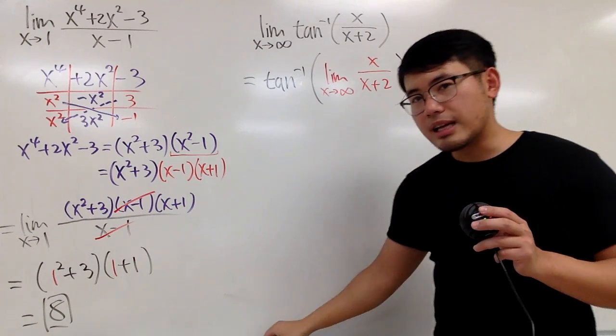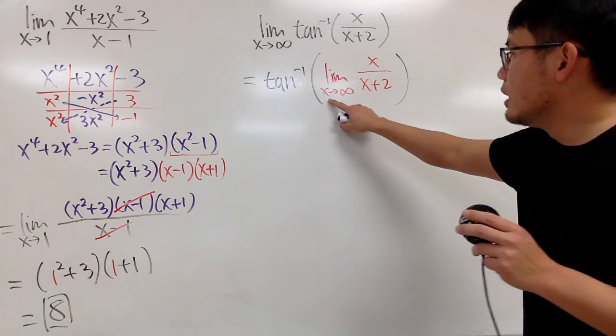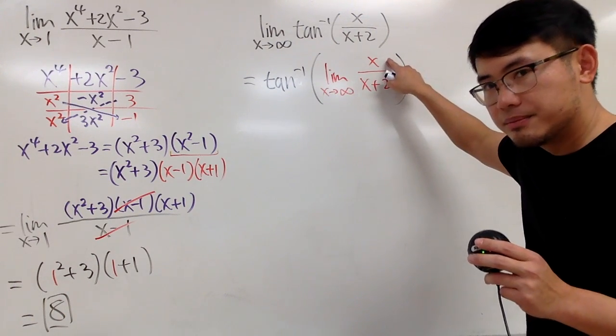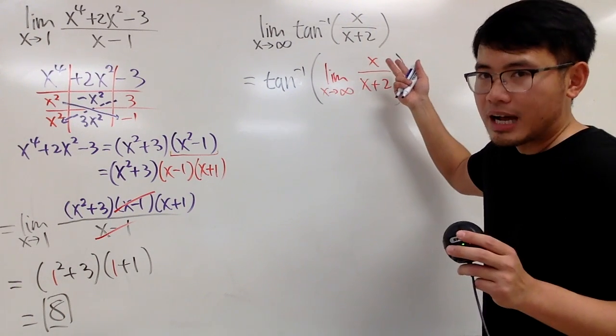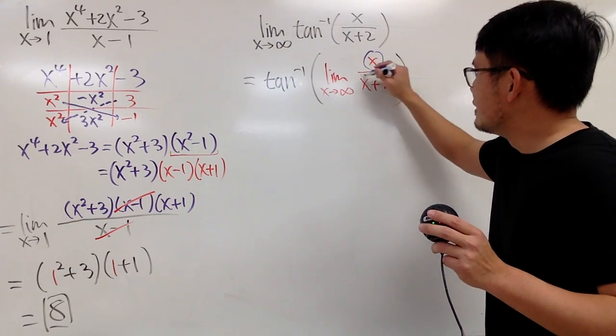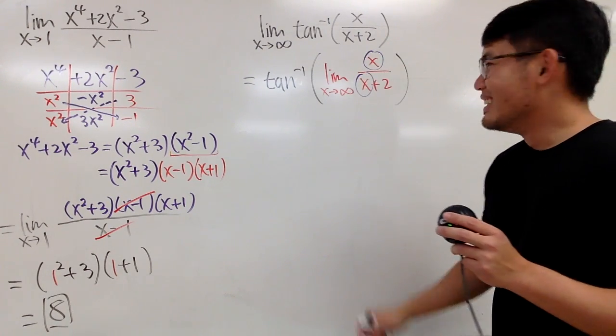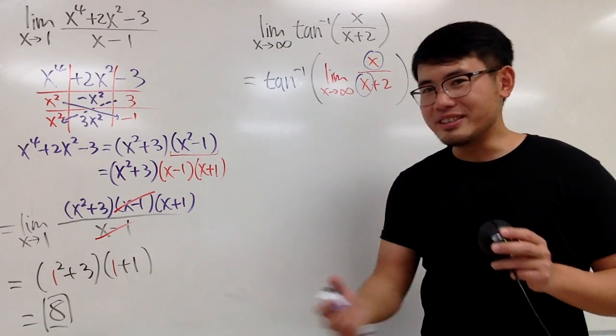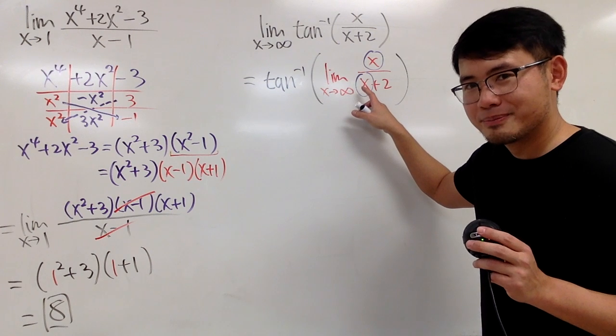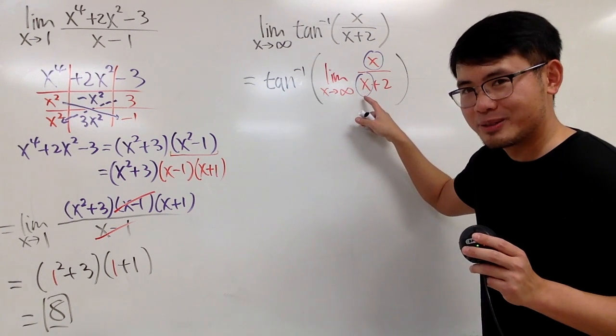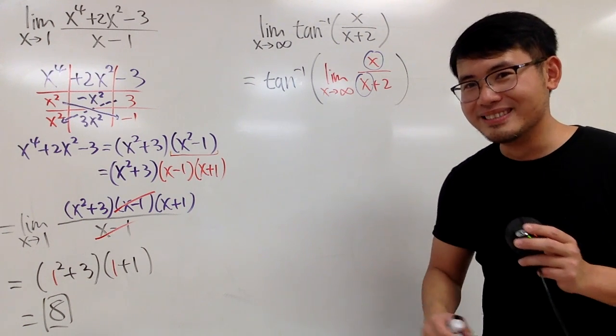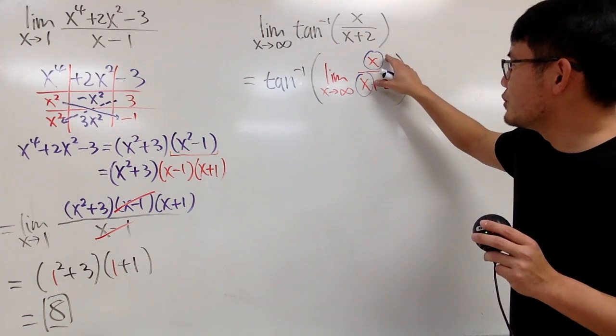Well, this is actually not that bad. Because, if x is approaching infinity, when you have a rational function like this, all you care is the highest power on the top of x, and then the highest power of x on the bottom. x and x pretty much. The plus 2 doesn't really matter. Just think about it. If x is approaching infinity, just like the amount of money that Jeff Bezos has, if you give him two more dollars, he doesn't even care. If you give me two dollars, I will say thank you. Right?